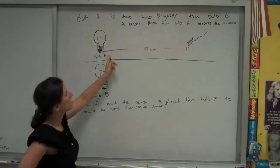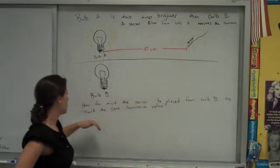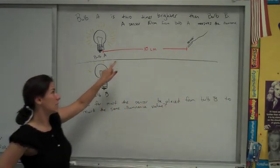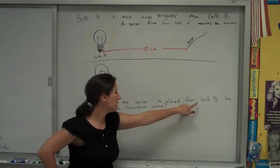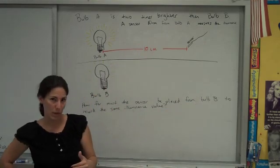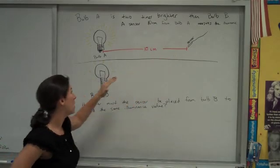And we also know that a sensor 10 centimeters from bulb A measures the illuminance at that point. What we want to know is how far must that same sensor be placed in a different experiment from bulb B to get the same exact illuminance value. So we want the same measurement as in this experiment, but now with the dimmer bulb.